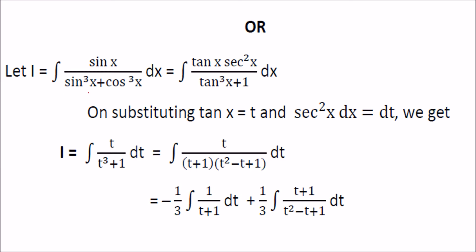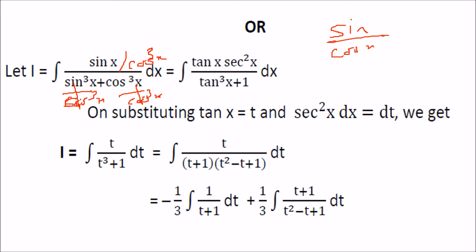The second integration option is sin x by sin³x plus cos³x. We divide the numerator and denominator by cos³x. After dividing, the denominator becomes tan³x plus 1, and the numerator becomes tan x times sec²x.